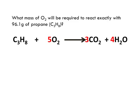So this is a typical problem, and it's really critical that you read the question multiple times to fully understand it. This is where many students make a mistake — not really understanding what they're being given and what they're being asked to find. So what you're being asked to find here is the mass of oxygen. What mass of oxygen will be required to react exactly with 96.1 grams of propane? That's your given.